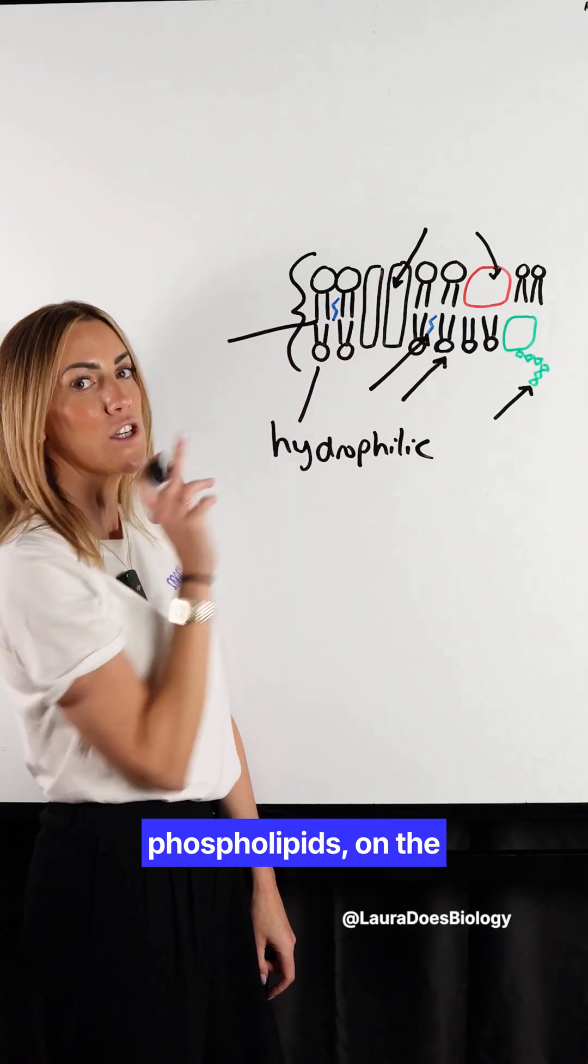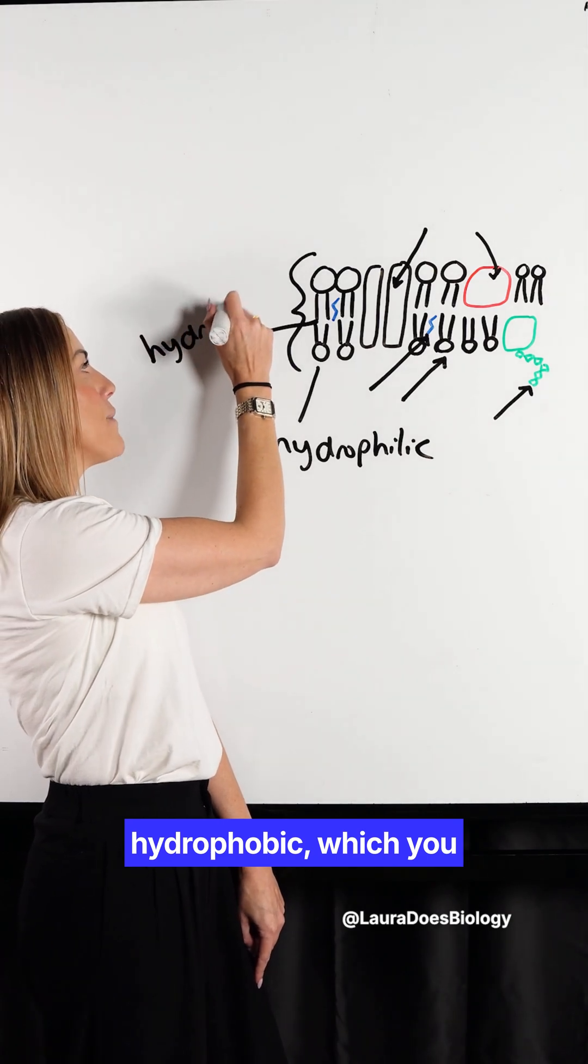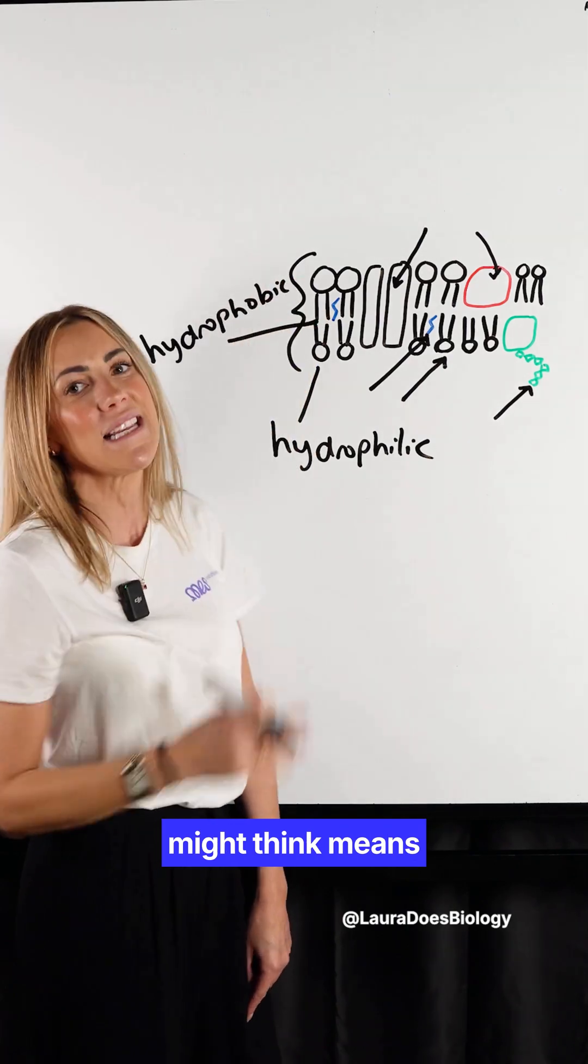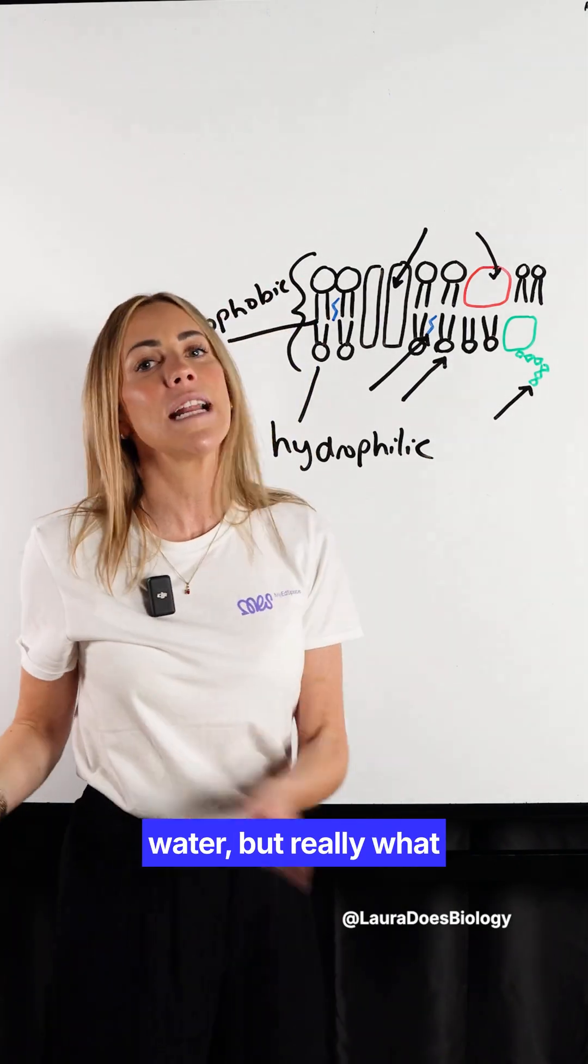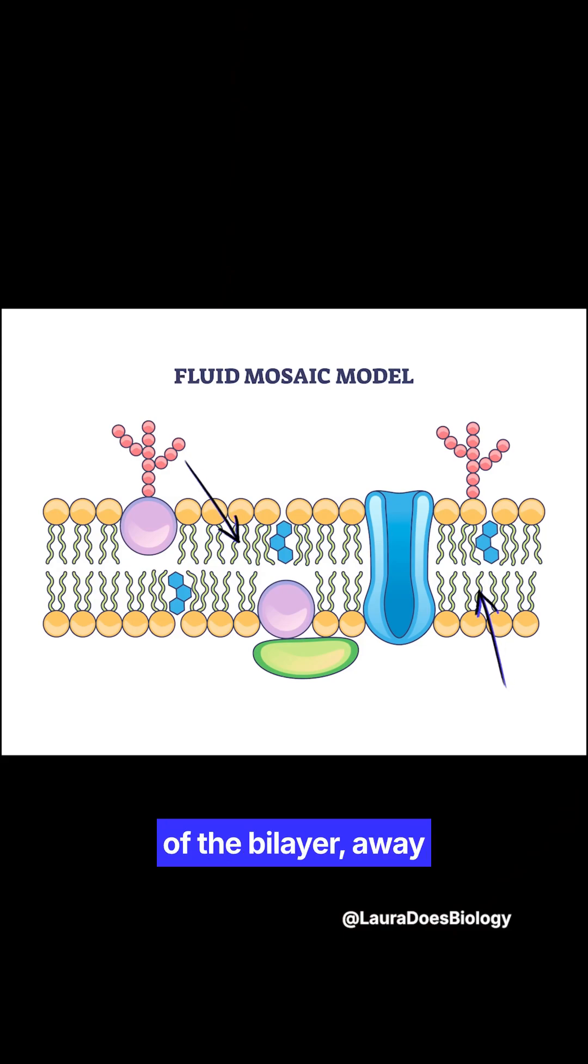The tails of the phospholipids on the other hand are hydrophobic, which you might think means they're scared of water, but really what it means is they repel water. So they're tucked away on the inside of the bilayer, away from the water on the outside.